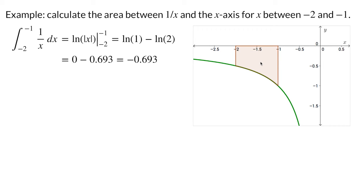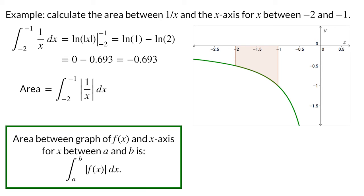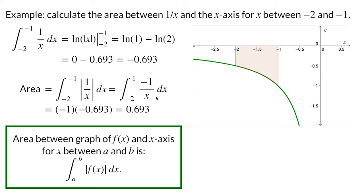If a function is negative, the definite integral doesn't give us area — it gives us minus the area. This problem is easily fixed. The distance from the x-axis to the function will always be the absolute value of the function, which gets rid of the negative sign if the function is negative. To get the area, we need to integrate the absolute value of 1 over x. When x is negative, since 1 over x is negative, we simply need to multiply by negative 1 to make it positive. The area is the integral from negative 2 to negative 1 of negative 1 over x dx. We just need to take our previous answer of negative 0.693 and multiply it by negative 1 to determine that the area is 0.693.